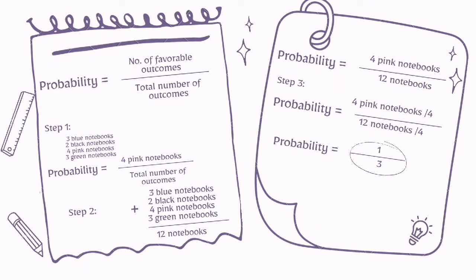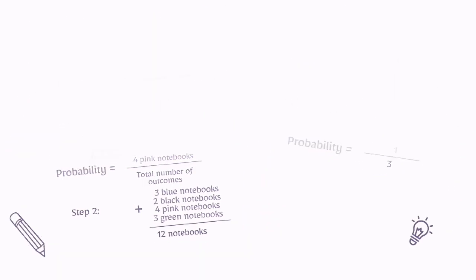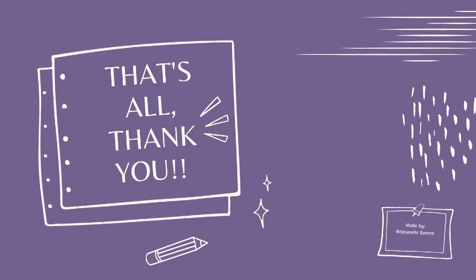For the solution: Step 1 is to figure out the number of favorable outcomes — in this case, 4 pink notebooks. Step 2 is to figure out the total number of outcomes: 3 blue plus 2 black plus 4 pink plus 3 green equals 12 notebooks. Step 3 is to find the probability in lowest terms, which is 4 over 12, or one-third. This means there is a one-third chance for Jake to purchase a pink notebook. That's all — thank you for listening.